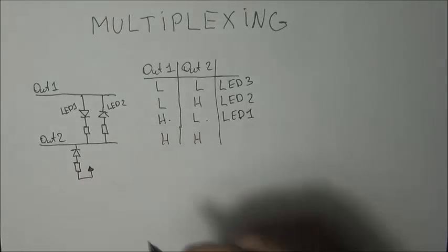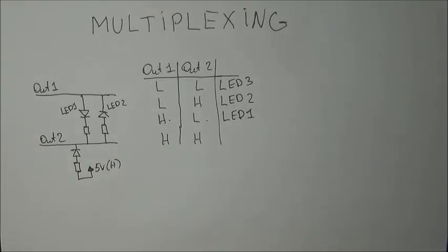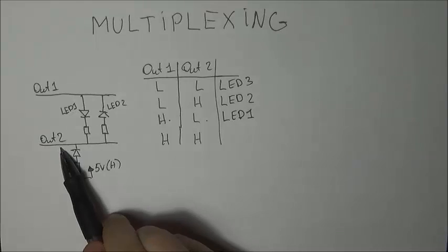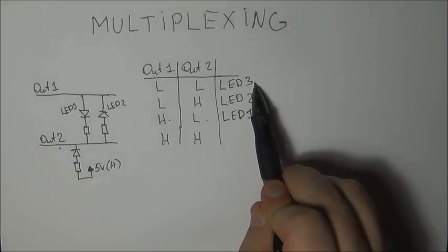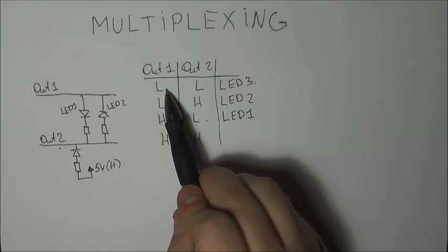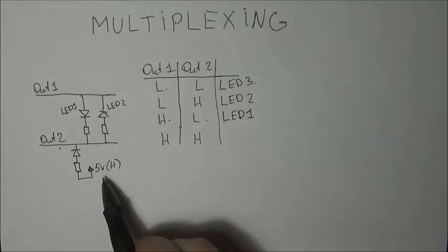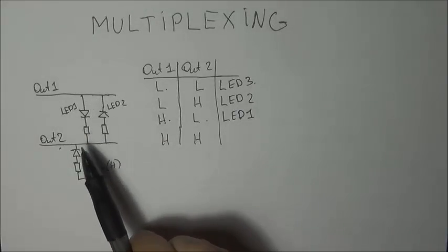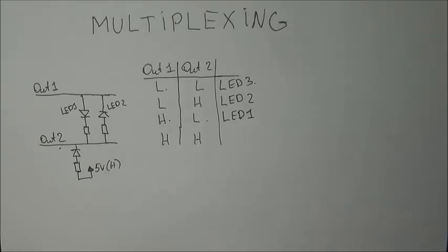So this is five volts or high if you prefer. If output 2 is low, LED 3 will light on given that output 1 is low. Be careful that if you set this to low and this to high, then both this LED and LED 2 will light up.